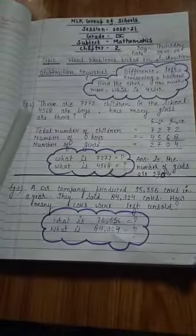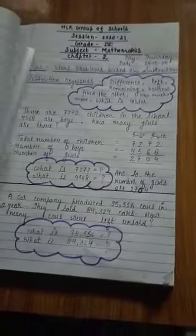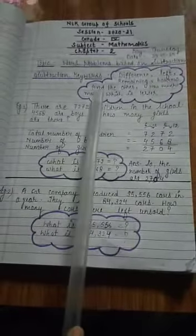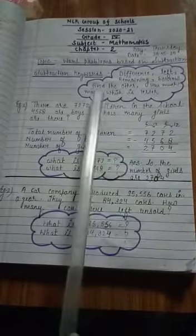So children, look, the subtraction keywords are difference, left, remaining, borrow, find the other, how much more, and which is lesser.